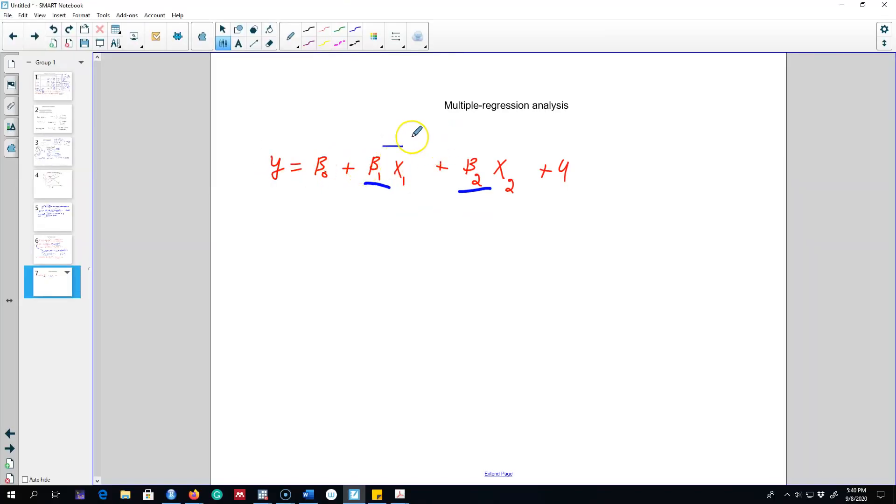We want to know what is the impact of x1 on y and we may also be interested in knowing what is the impact of x2 on y. As in the case of a simple linear regression model, these beta coefficients beta 1 will show the impact of x1 on y and similarly beta 2 will show the impact of x2 on y.